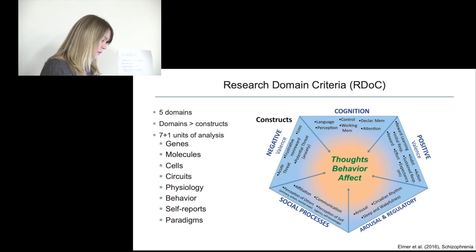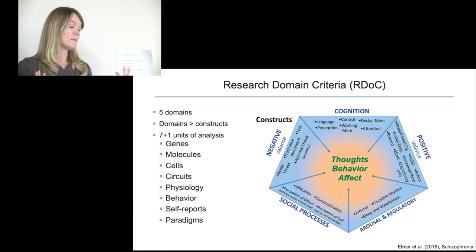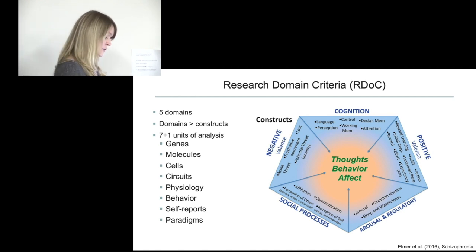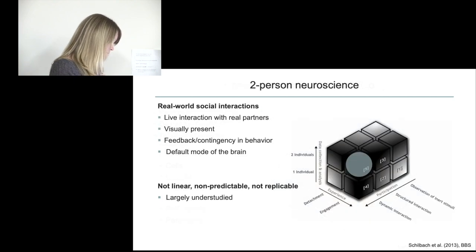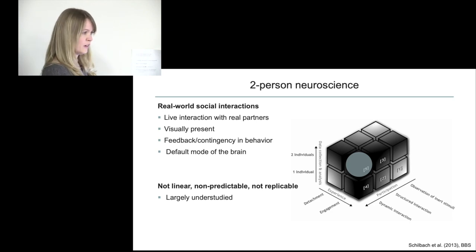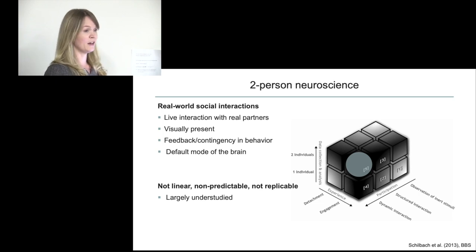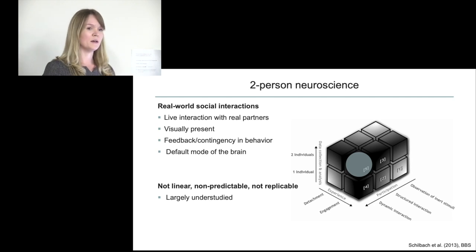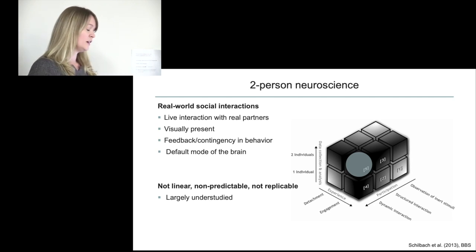Until a few years back there was a real methodological problem. As experimental psychologists we want to control things, and social interaction by definition is uncontrollable — you can't replicate anything, there's no second chance for your first impression. It was so difficult that Leo Schilbach referred to it as the dark matter of neuroscience, because it was so against many things we strive for in our experiments.